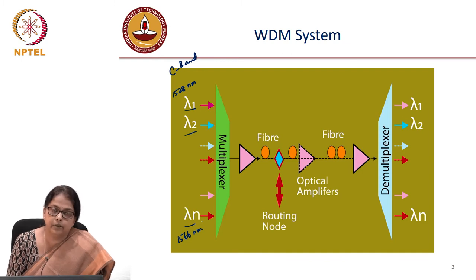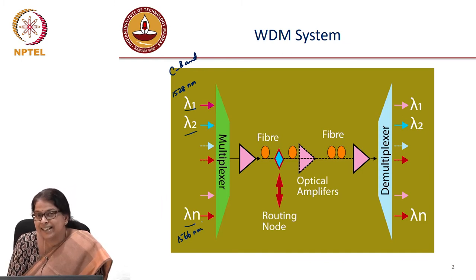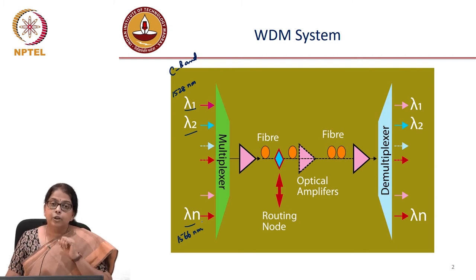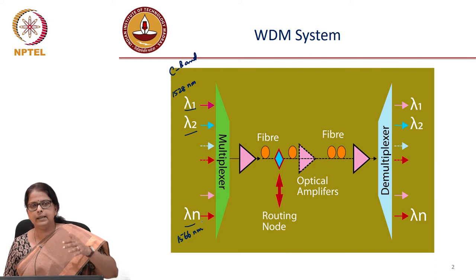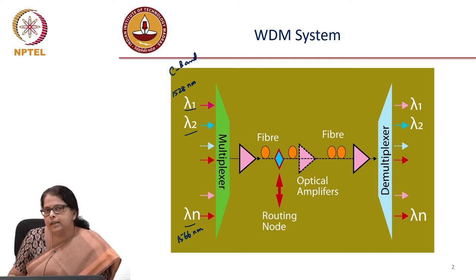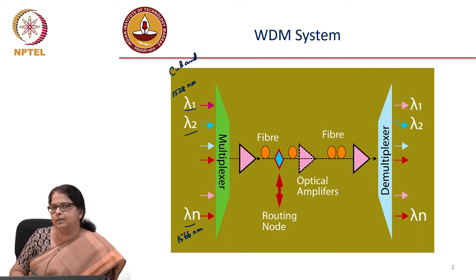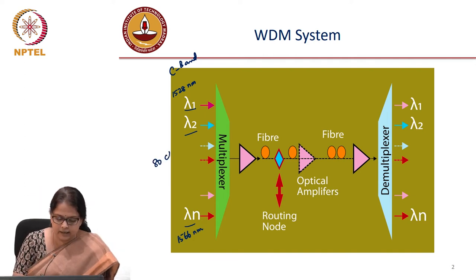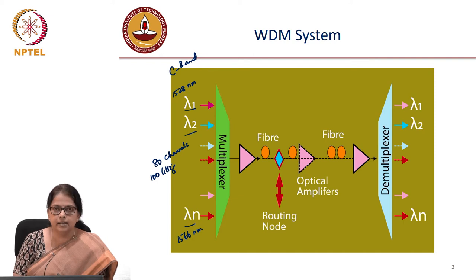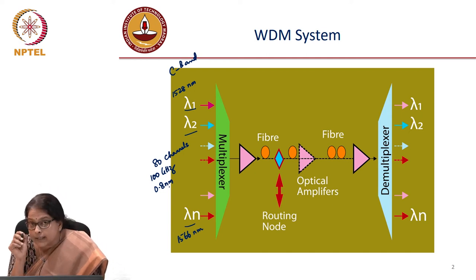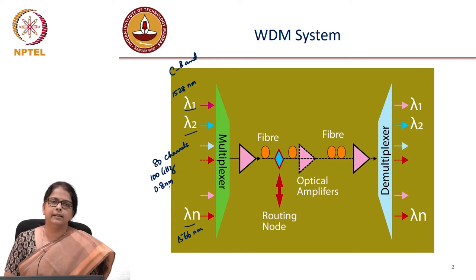If you look at the coupling ratio of the WDM coupler, the wavelength dependence is such that the coupling coefficient is not sensitive to this small range of wavelengths. You use a WDM coupler when you want to combine, say, 980 nanometers and 1550 nanometers — the pump and signal wavelengths of an EDFA. You cannot modify a directional coupler to get coupling within the C-band, where there are 80 channels with a separation of about 100 gigahertz, corresponding to about 0.8 nanometers. You need a device extremely sensitive to wavelength for a wavelength division multiplexing system.